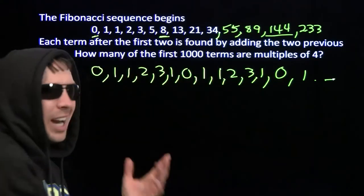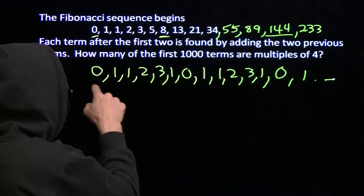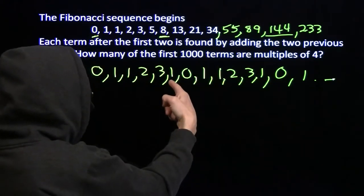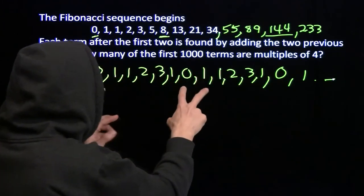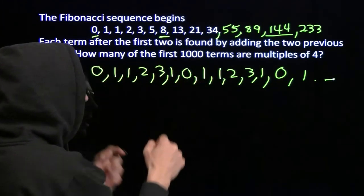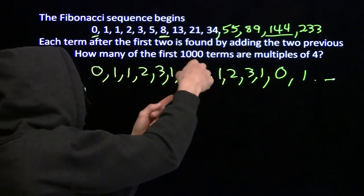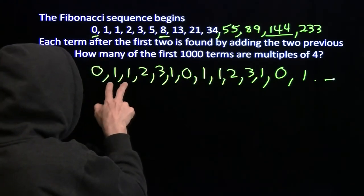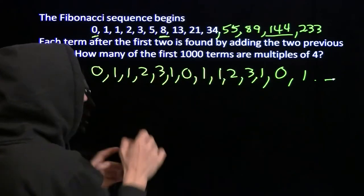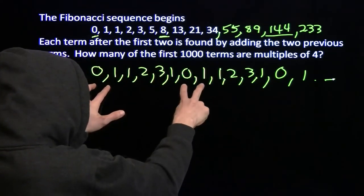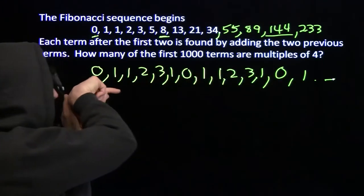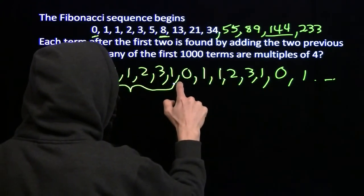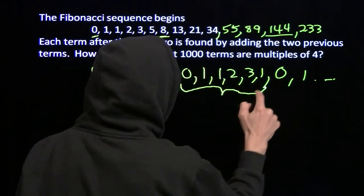These remainders follow the same relationship as the Fibonacci sequence: 0 and 1 is 1, 1 and 1 is 2, 1 and 2 is 3, 2 and 3 gives remainder 1, 3 and 1 gives 0, 1 and 0 gives 1 — and now we're back to the same starting point. Since we generate each term just by combining the 2 before it, once I repeat two consecutive terms I know the whole thing is going to repeat. So once I see a 0 and 1 again, everything after it will be the same as before.